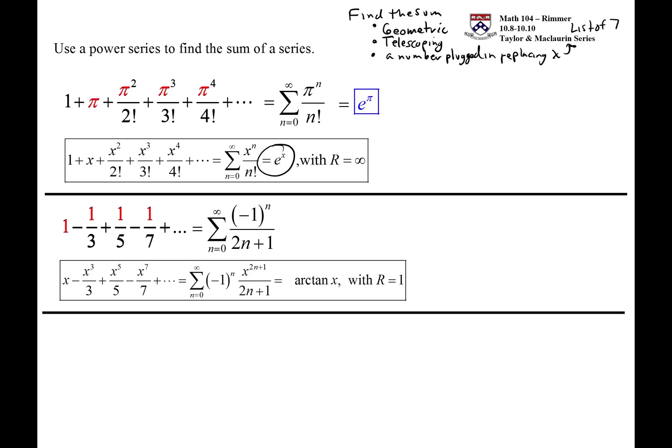We have arctan's power series from the list of 7, and it looks like 1 has replaced the x. So then we do it. We have the summation, replace the x with the 1, and then also we're going to put in to the function, replace the x with the 1, so we have the arctan of 1.